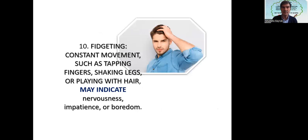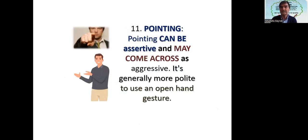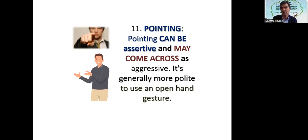Fidgeting — constant movement such as tapping fingers, shaking legs, or playing with hair may indicate nervousness, impatience, or boredom. Pointing can be assertive and may come across as aggressive. Some people may interpret it as aggressiveness, so it really requires attention. It's generally more polite to use an open hand gesture instead of pointing — for example, gesturing this way please.